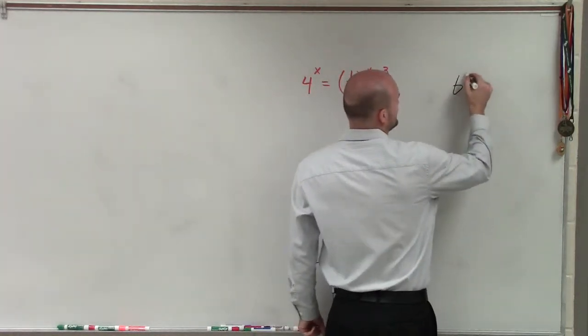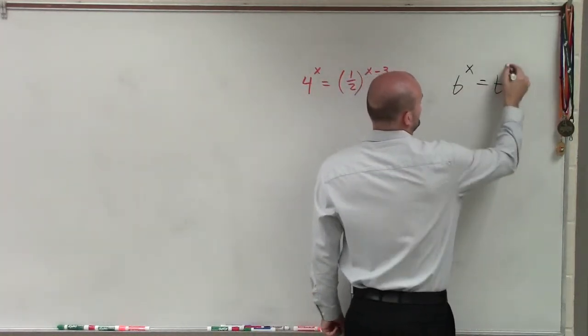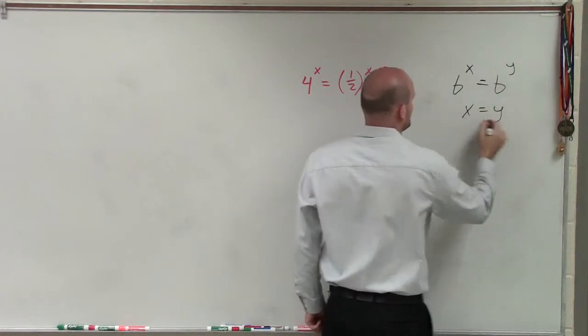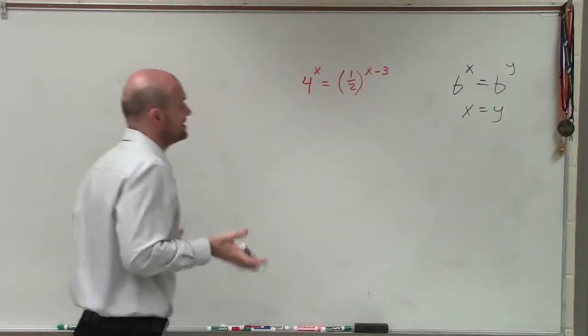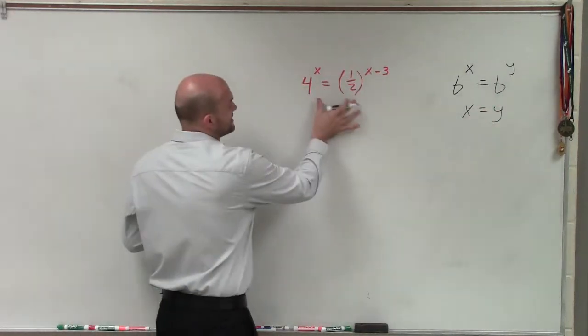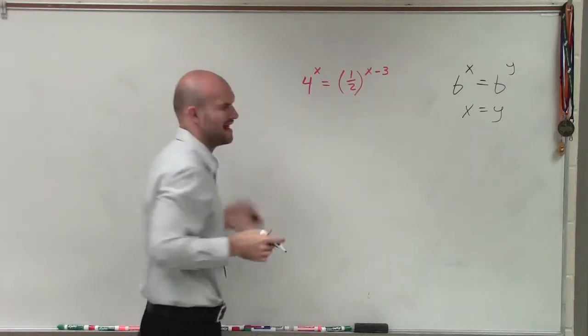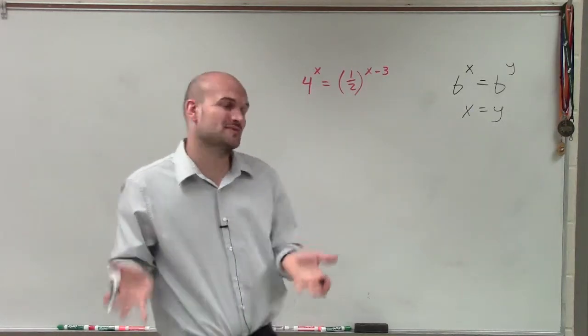And again, remember the 1 to 1 property says if I have b to the x equals b to the y, then x equals y. So one thing I'm going to want to do is see if I can rewrite these using the same base. So I have 4 and 1/2 and I got to think, how can I rewrite those with the same base?